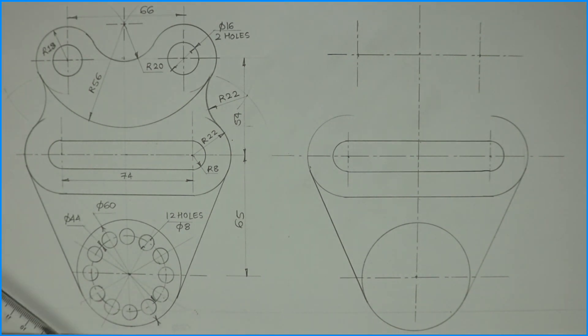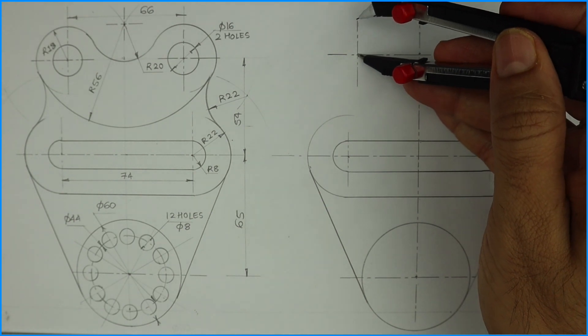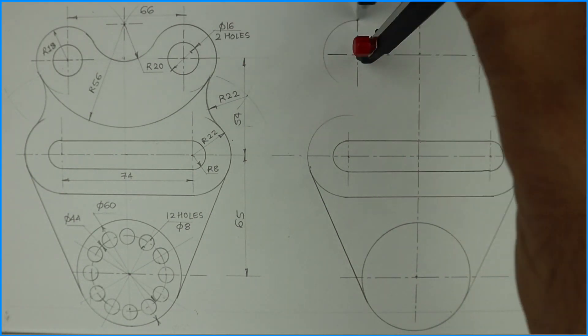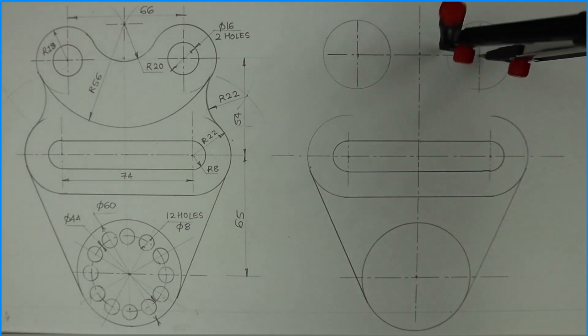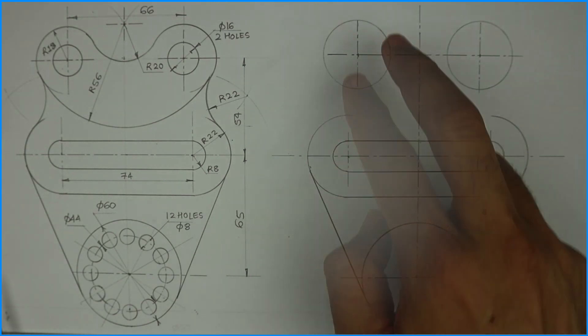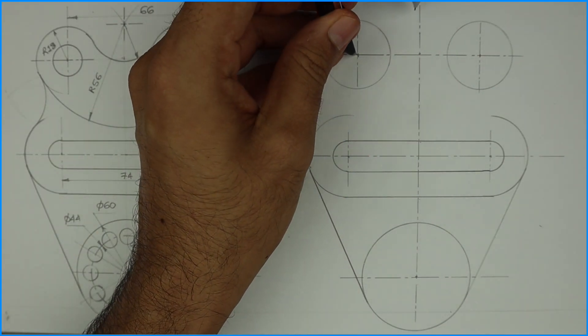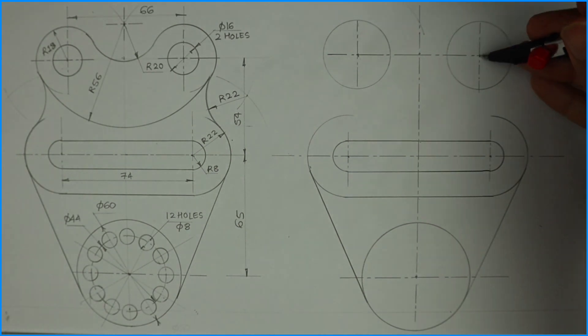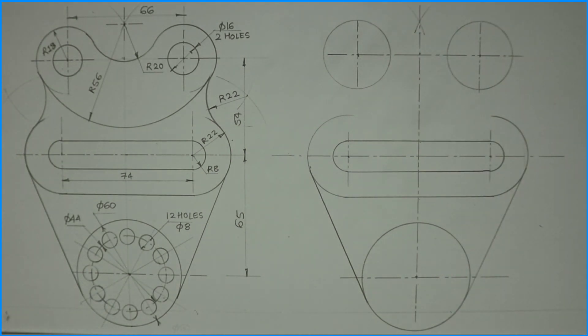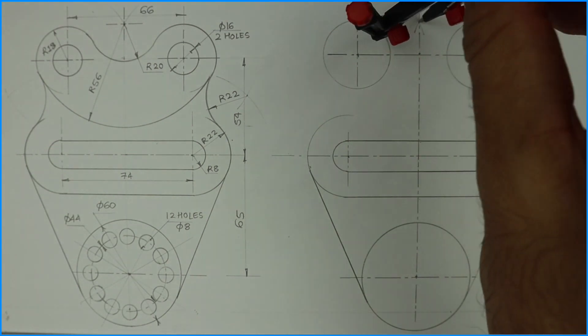Now if you see this is external with radius 20. They have external circle 20, so we'll take 18 plus 20 which is 38. From here we'll cut 38 and from here also we'll cut 38. Wherever it will meet, from that point we'll draw 20.